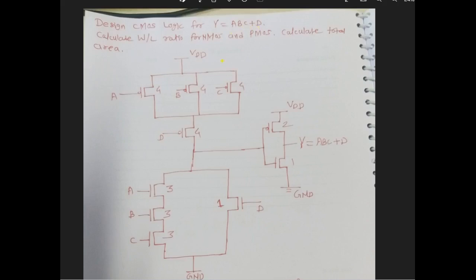For the pull-up network of ABC plus D, A, B, and C are connected in parallel, and D is connected in series with this. For the pull-down network, ABC are connected in series and D in parallel. As there is no bar over this expression, we have connected an inverter here, with separate power supplies.